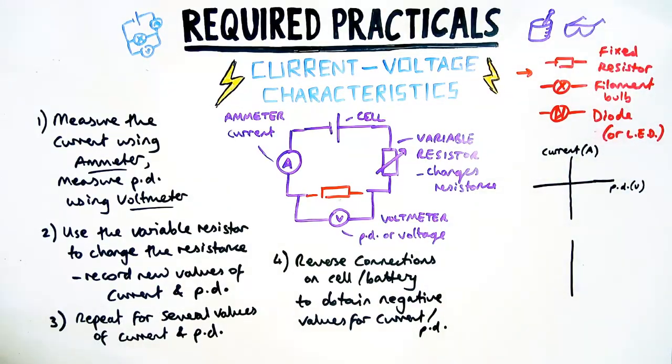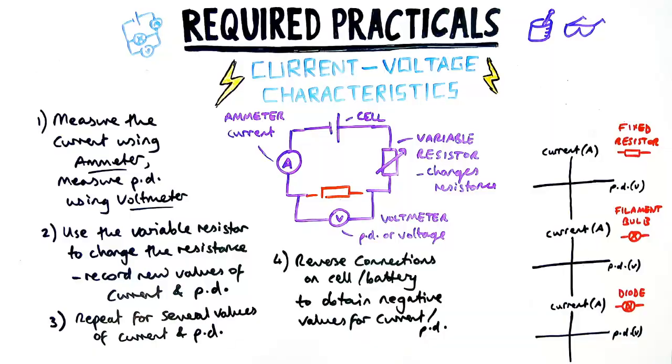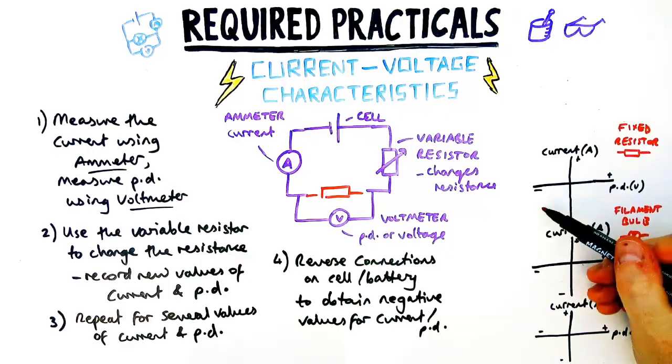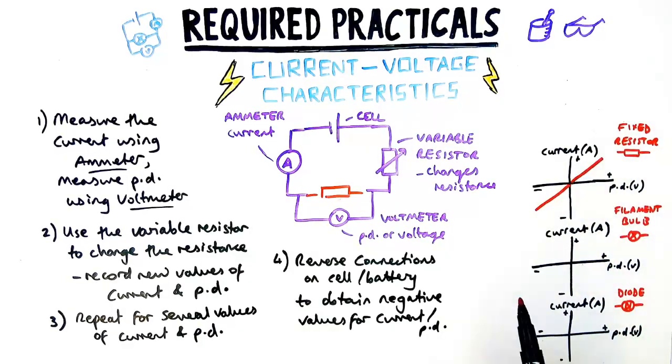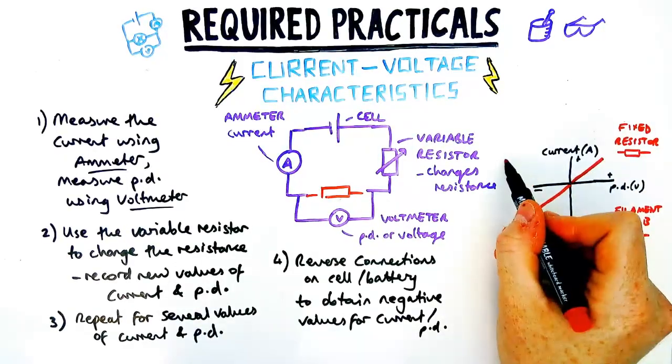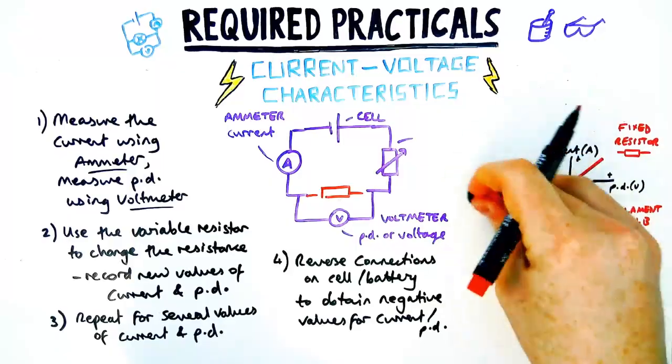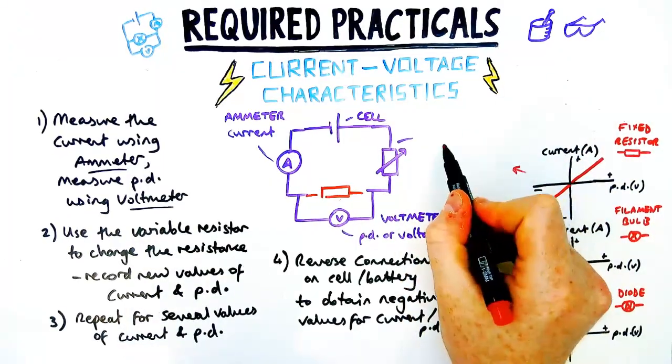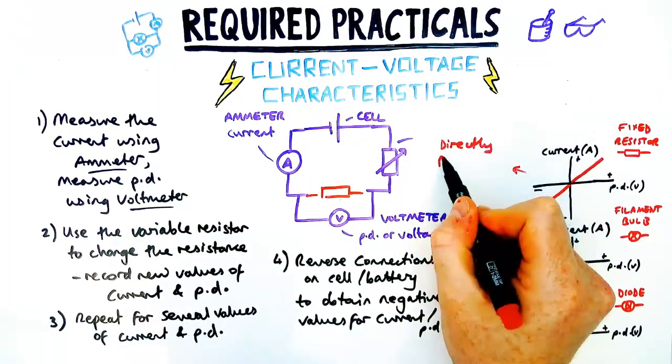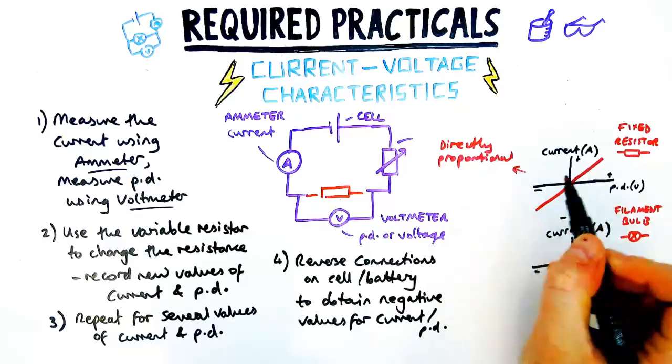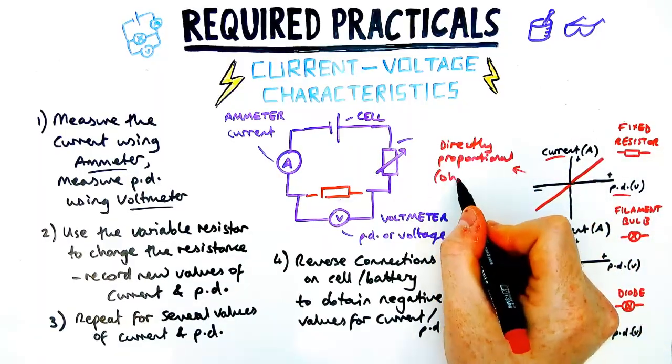For a fixed resistor, the graph of PD and current is a straight line that goes straight through the origin. The special name for that is directly proportional. What that means is if the PD doubles, the current also doubles. This is what's known as Ohm's law - that voltage is proportional to current.